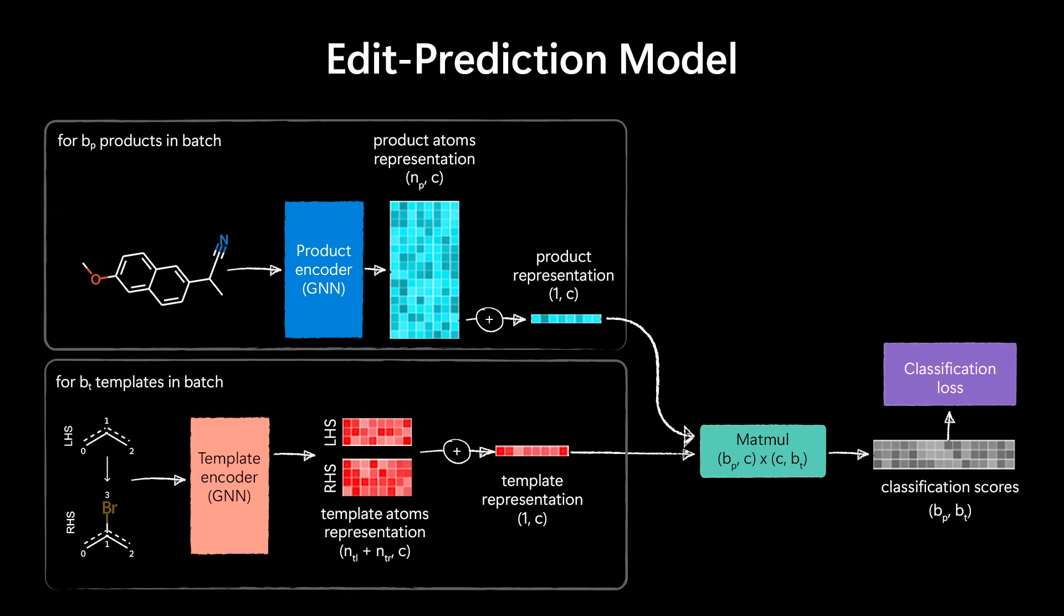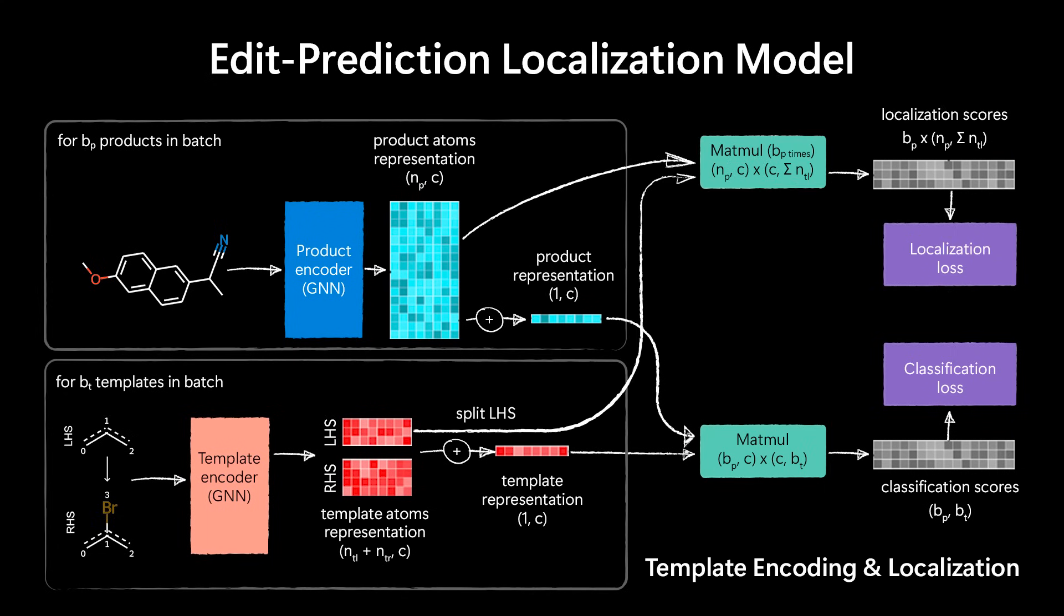Now, there's an additional complication, which is where do we apply this template in the molecules, because there can be multiple matches. And for this, we have an additional localization model that gives us scores to where the template optimally matches in the molecule. And this, again, we can train end-to-end with stochastic gradient descent.